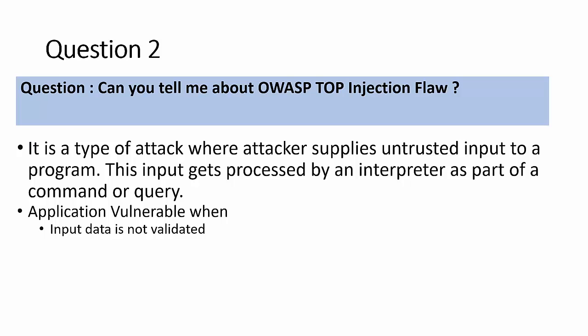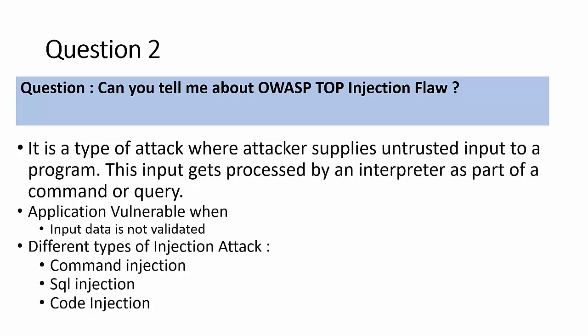A useful analogy: if you ask me 1+1 and I say 3 without processing — that's wrong, it should be 2. Or if you're asking a math teacher a history question, a good teacher says 'I can't answer that.' That's input validation working correctly — reacting appropriately to out-of-scope queries. The application is vulnerable because input data is not being validated.